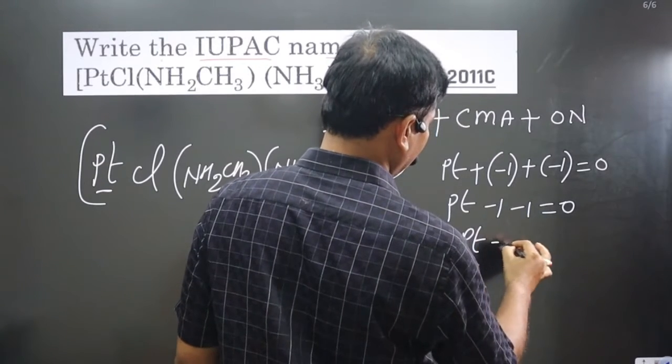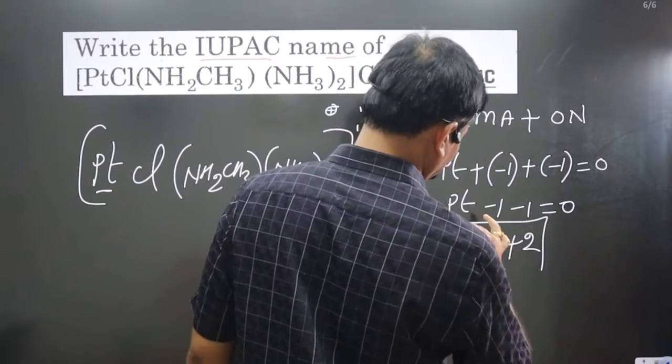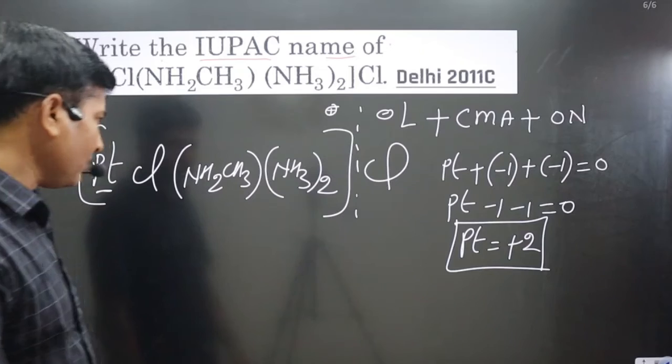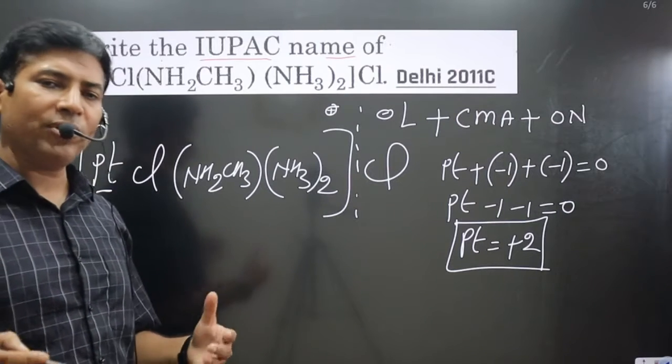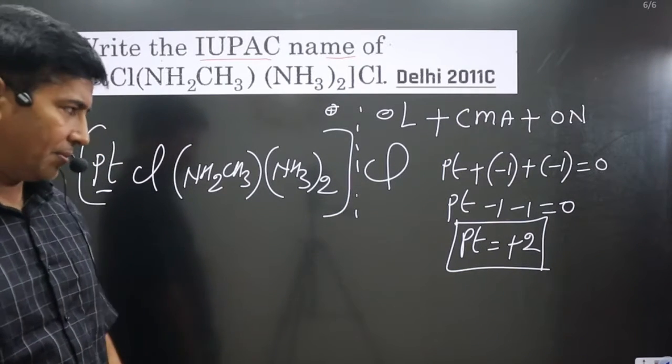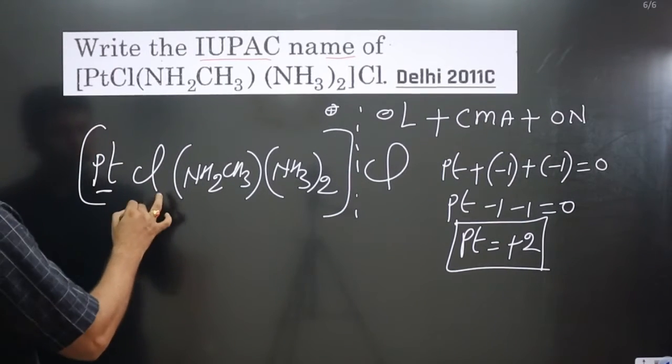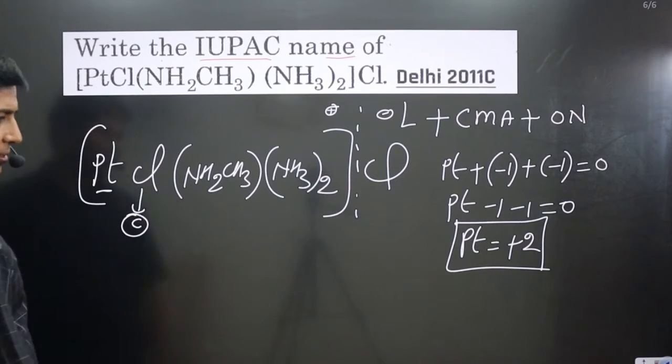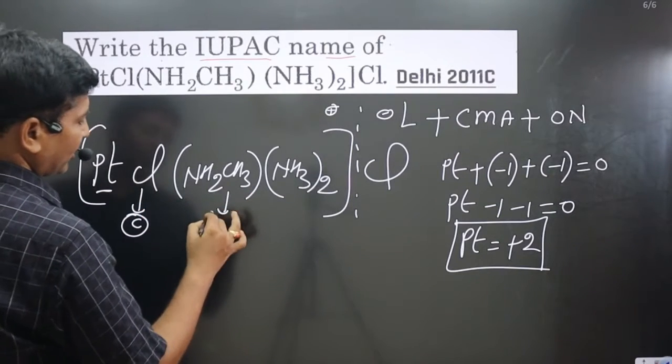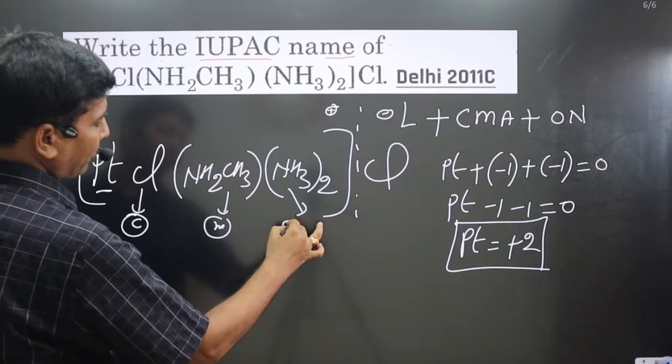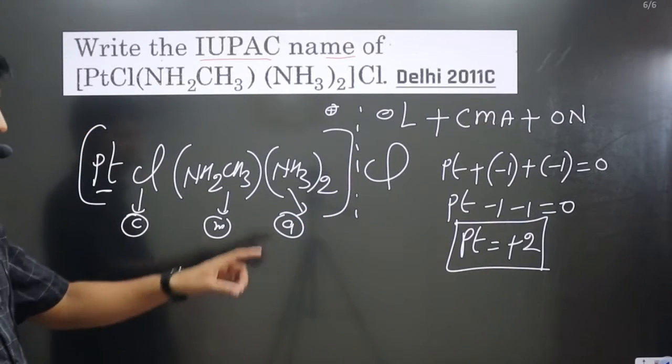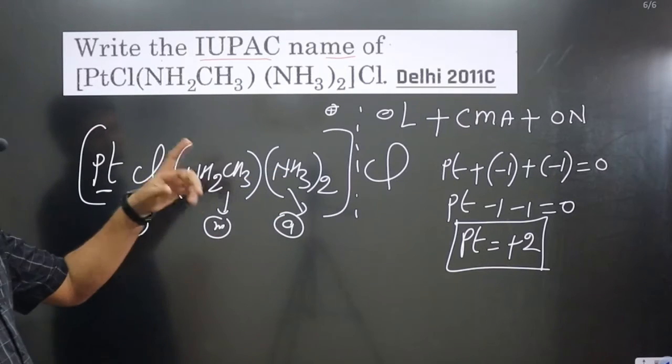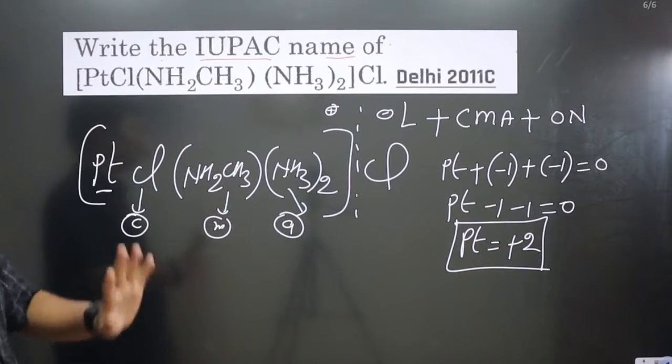Now let's start naming ligands. If more than one type of ligand is given, we arrange them in alphabetical order. Chloride starts with C, methylamine starts with M, and amine starts with A. So we arrange in alphabetical order: first NH₃, then Cl, then methylamine.